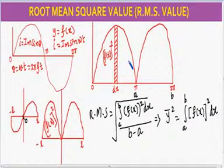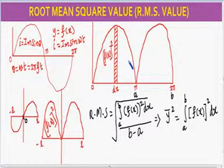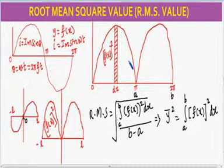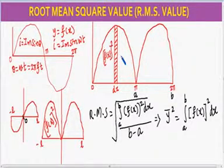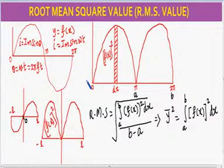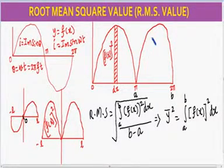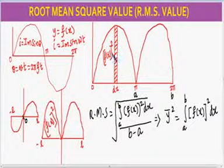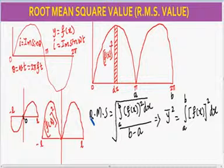Whatever the variation may be, if the variation is symmetrical, we cannot find out the average value directly, because the area under the curve would be equal to zero. In that case, we go for squaring each and every coordinate, by which we find the squared wave. The mean square value equals the area under the squared curve divided by the base, and then we take the square root to obtain the root mean square value.